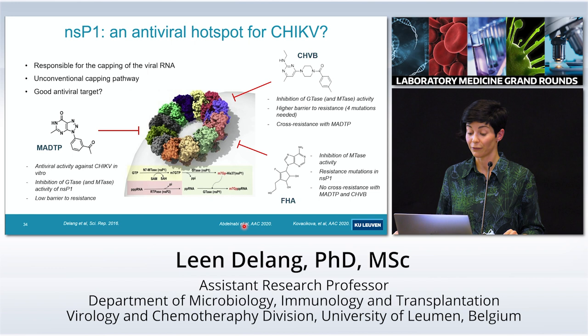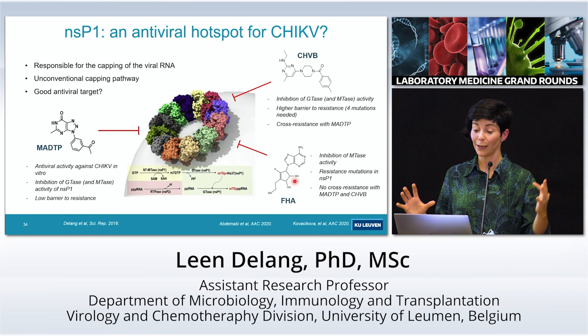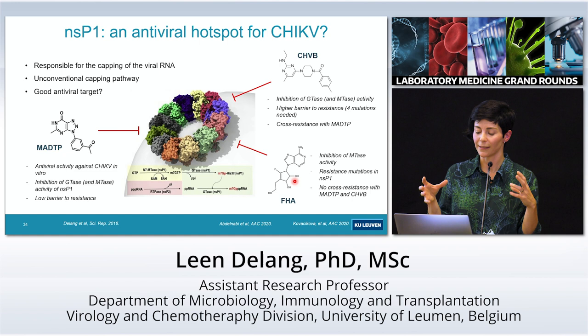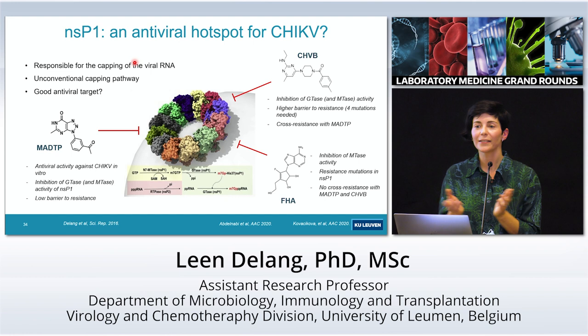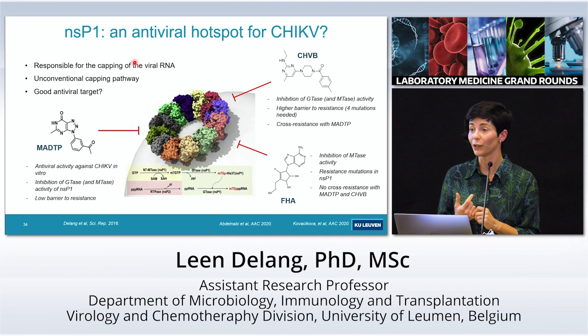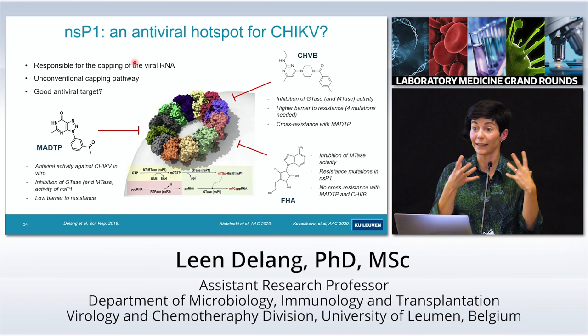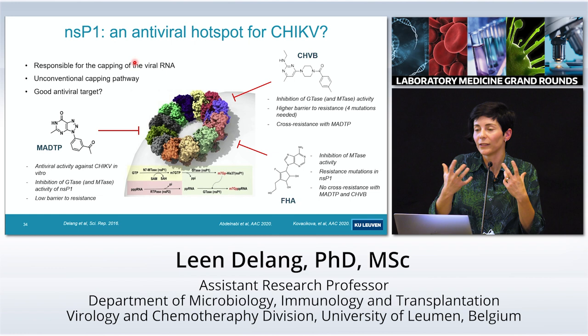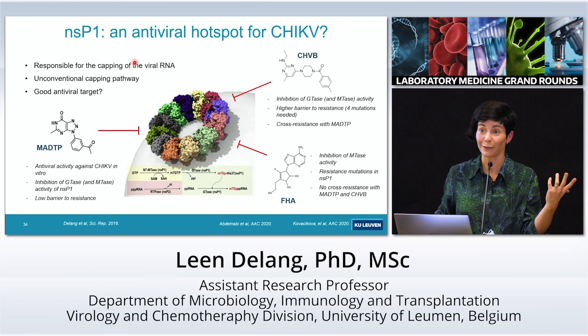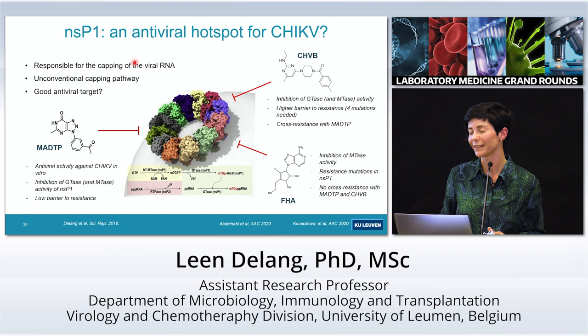Another group also found NSP1 inhibitors with a very different chemical structure, and the resistance mutations they found were different from ours — no cross-resistance — meaning there are actually two different spots in the NSP1 protein that can be inhibited. This is a really exciting antiviral hotspot. However, these inhibitors are very specific for one virus — the dengue JNJ compound only works against dengue, and the NSP1 inhibitors only work for chikungunya — so we cannot develop antivirals for all 130 arboviruses known to cause human disease.